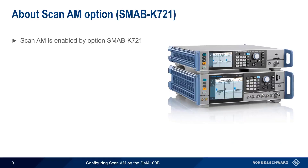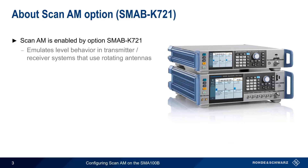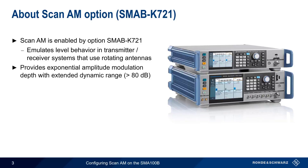On the SMA-100B, Scan-AM is enabled by software option K721. This option can be used to emulate the combined pulse and AM signals that we looked at a few moments ago. To do this, the SMA supports so-called exponential amplitude modulation, which can provide the extended dynamic range needed in these types of scenarios. Note, too, that either internal or external modulation sources can be used.